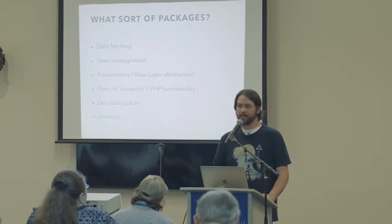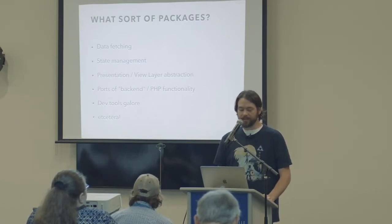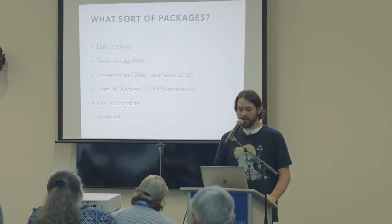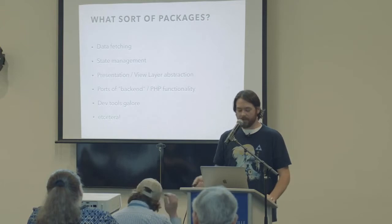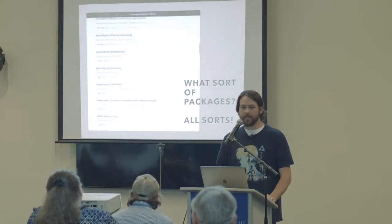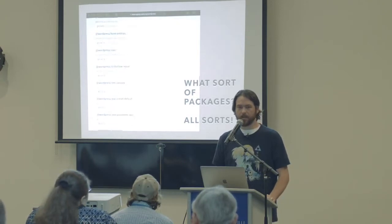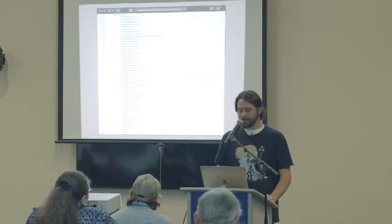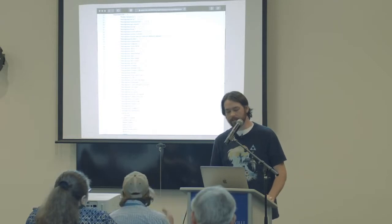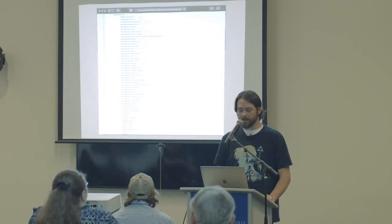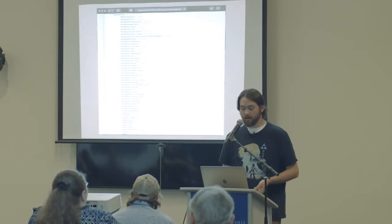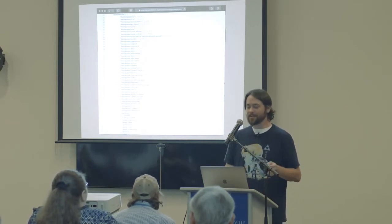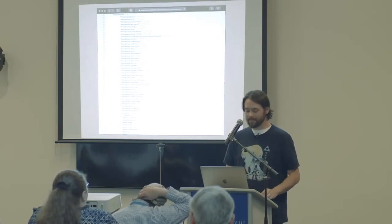What sort of packages are there? There's all sorts: data fetching, state management, presentation, view layer, ports of back-end PHP stuff that you'd expect in 2019 to be on the front end. There are also dev tools and more. If you look at NPM under the WordPress organization, there are many packages there for the using. If you look at the source of WordPress in the package.json, you can see all of those WordPress packages being imported into WordPress itself. So the source lives in Gutenberg and WordPress imports them — and you can do the same thing.